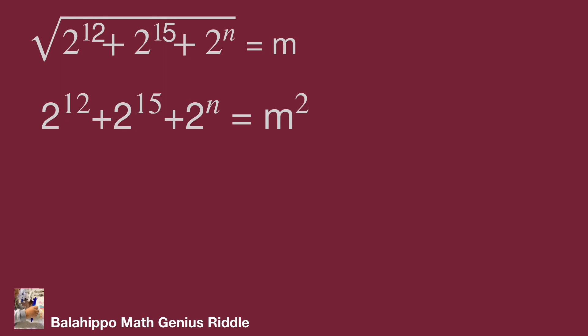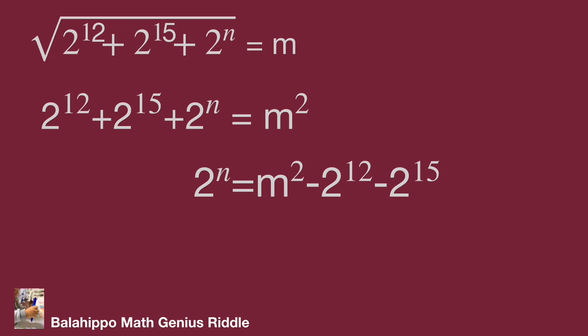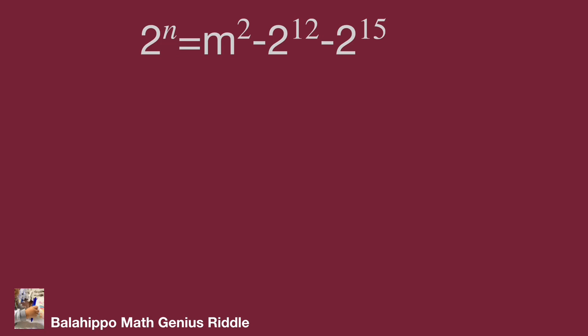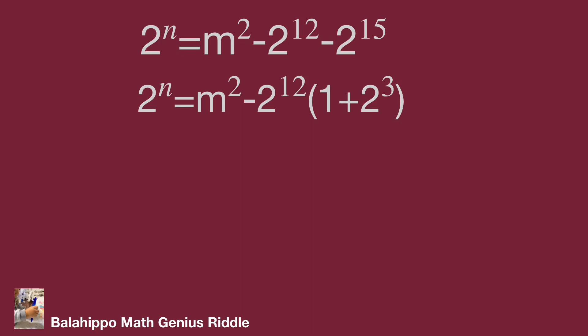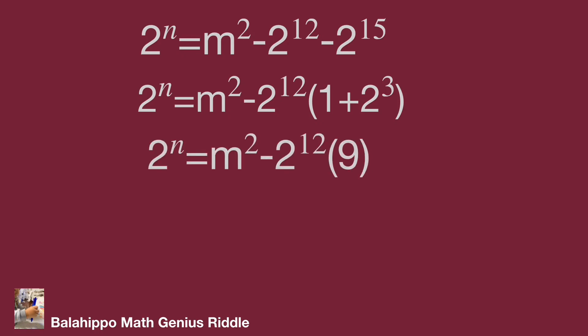I'm going to utilize the squares formula. Move the 2 to the power of 12 plus 2 to the power of 15 items to the right side of the equation. The equation becomes 2 to the power of n equal to m squared minus 2 to the power of 12 times bracket 1 plus 2 bracket. So the equation becomes 2 to the power of n equal to m squared minus 2 to the power of 12 times 9, and 9 equals 3 squared.